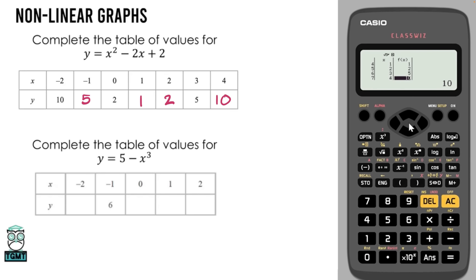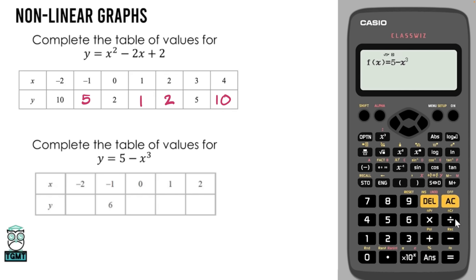This works for any equation, whether you have a quadratic, a linear graph, or a cubic. Let's have a go at a cubic graph. For this one we have 5 minus x cubed, so again we're in table mode: 5 subtract alpha bracket to get that x, then use your squared, cubed, or the empty power button. There we go — 5 minus x cubed. We don't need a second equation so we can click past that.